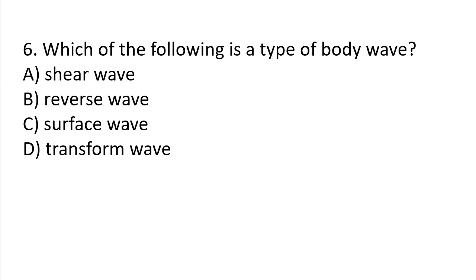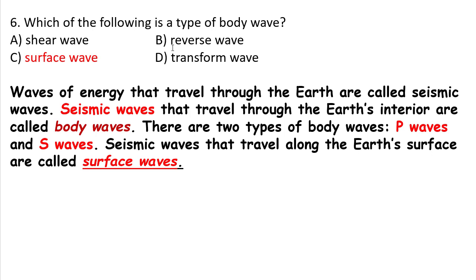Question 6: Which of the following is a type of body wave? A) Shear waves, B) Reverse waves, C) Surface waves, D) Transform waves. Waves of energy that travel through the Earth are called seismic waves. Seismic waves that travel through the Earth's interior are called body waves. There are two types of body waves: P waves and S waves. Seismic waves that travel along the Earth's surface are called surface waves. So the answer will be A — shear waves, which are S waves.